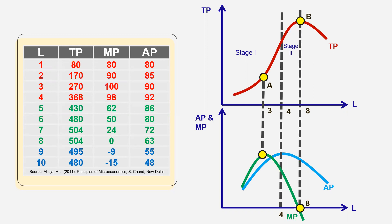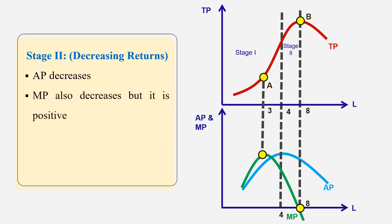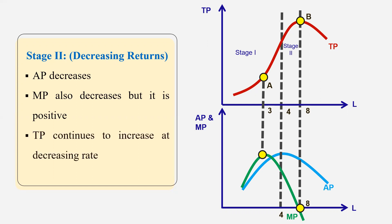What are the characteristics of the second stage? Stage two is known as decreasing returns. Here average production decreases, marginal production also decreases but it is positive. You can see in the diagram that marginal production decreases but remains positive, average production also declines, and total production continues to increase at a diminishing rate.